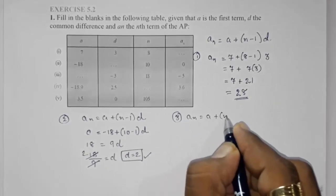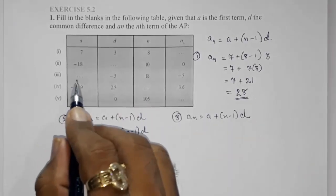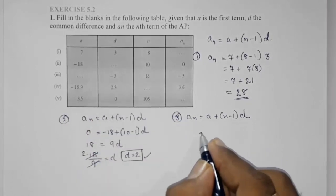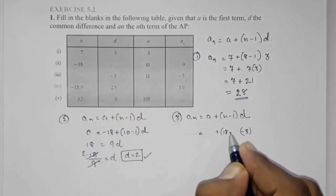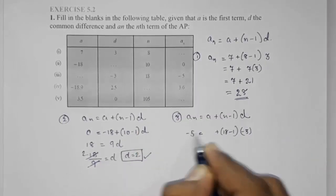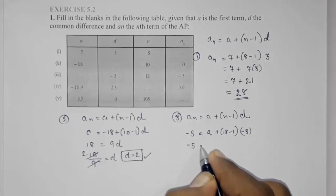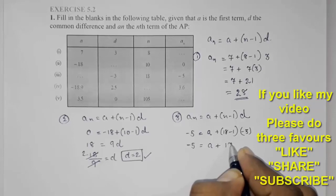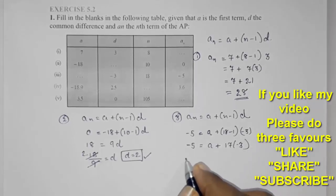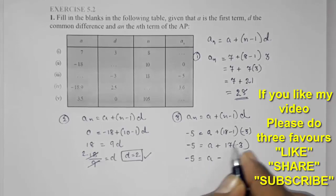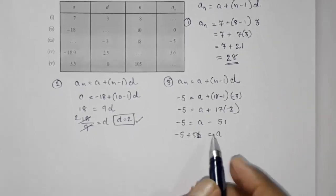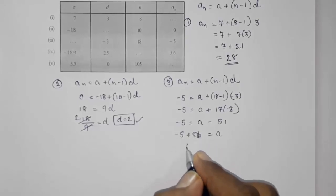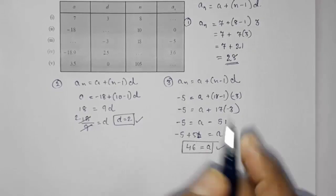Answer 3: using the same formula. This time a is not given, d is minus 3, n is 18, and an is minus 5 — we want to find a. So minus 5 equals a plus 18 minus 1, which is 17, multiplied by minus 3. That gives a plus minus 51. Taking minus 51 to the other side gives plus 51, so a equals 51 minus 5, which is 46. The first term is 46.